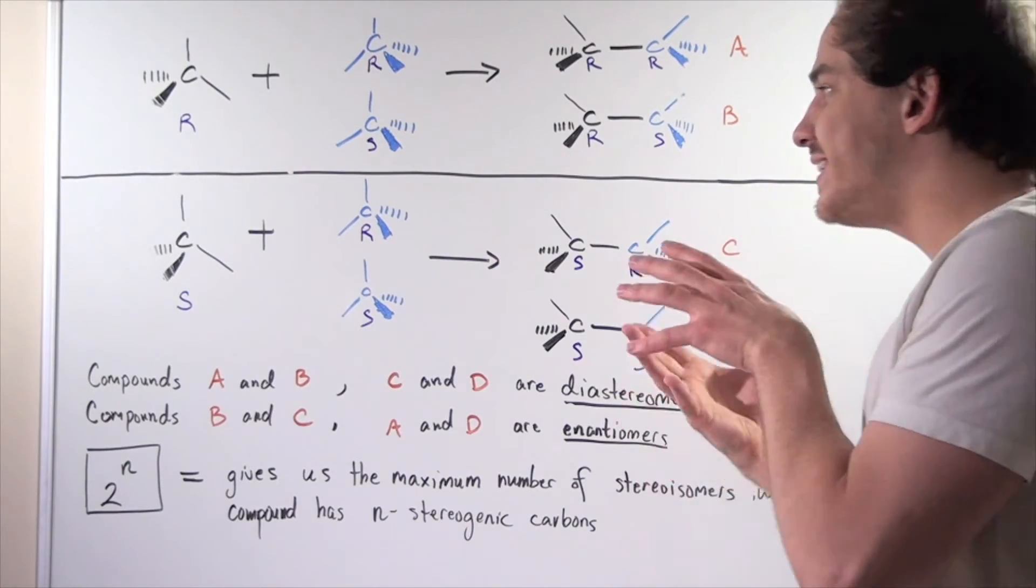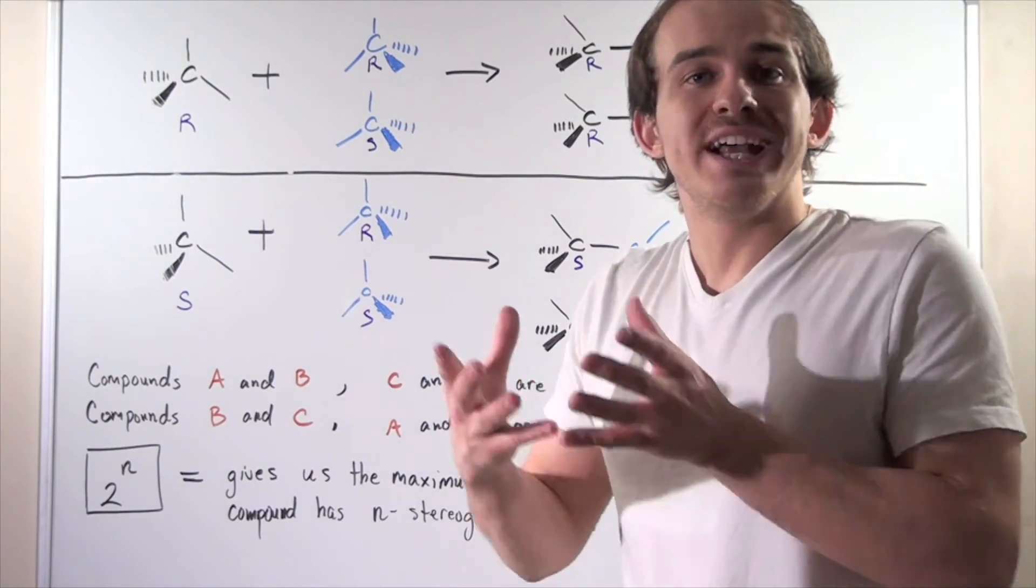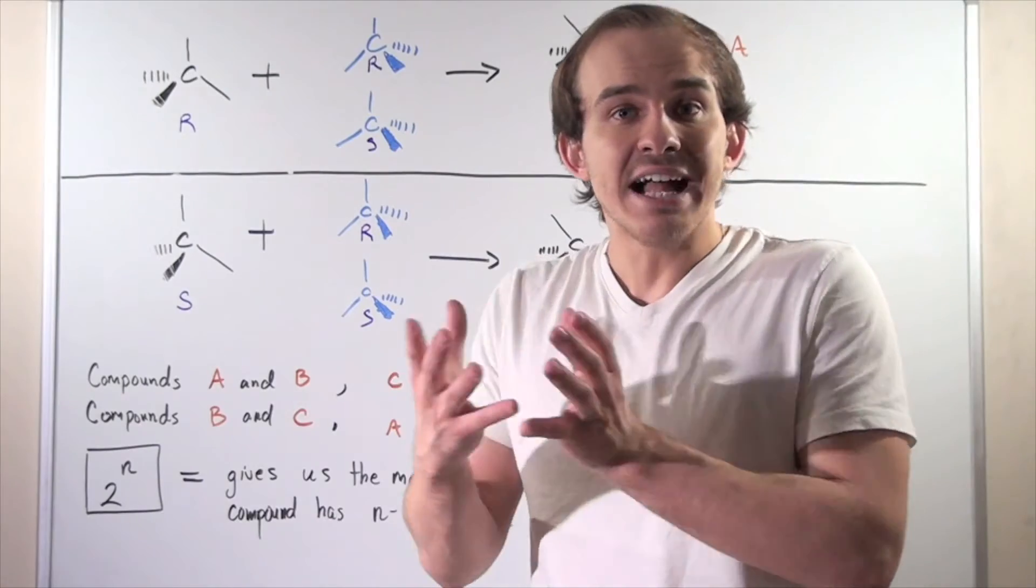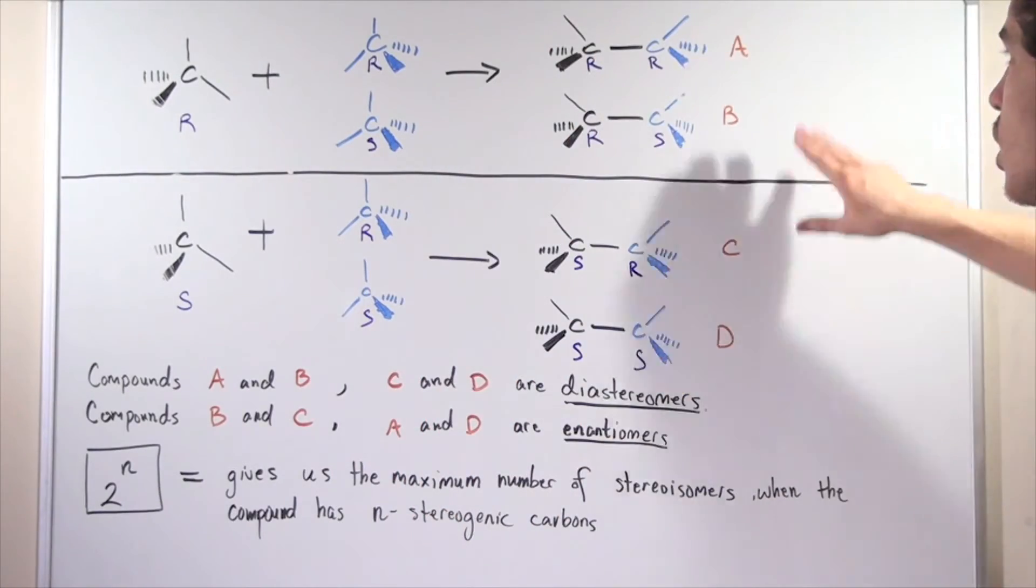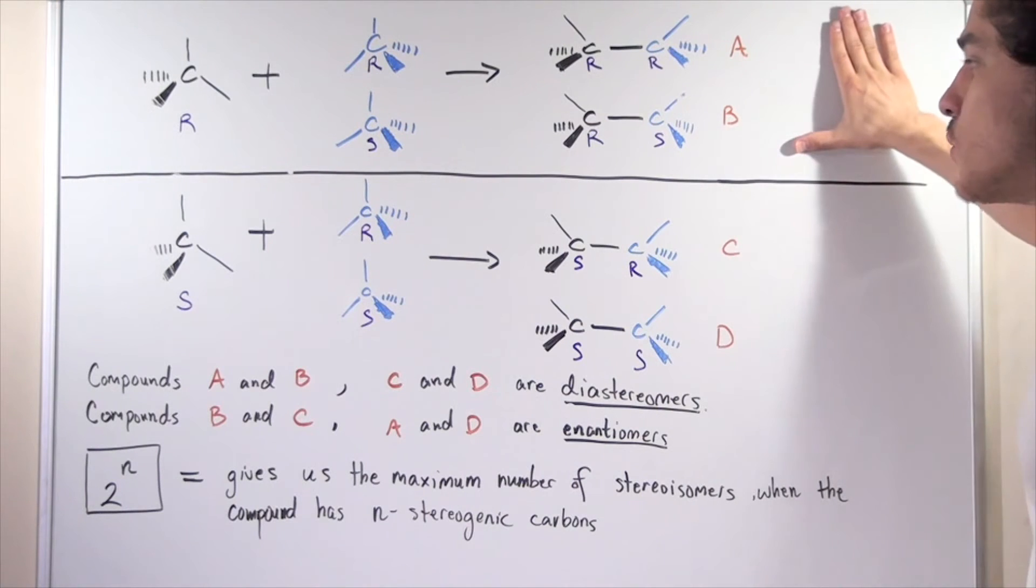In other words, what we did is we combined two enantiomers, so a pair of enantiomers to produce four different possibilities, four different stereoisomers.